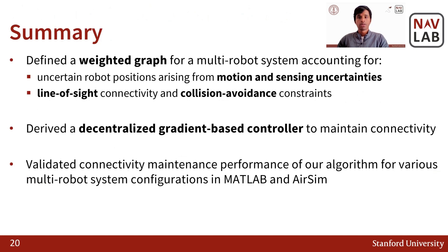In summary, we first defined a weighted graph for a multi-robot system that accounted for both motion and sensing uncertainties, and also accounted for more realistic communication constraints such as line-of-sight connectivity and collision avoidance. We then derived the gradients required for our decentralized controller, which allowed robots to maintain connectivity in the system. Finally, we validated our algorithm for various multi-robot setups and showed an improvement in connectivity maintenance performance under uncertainty compared to previous works. Thank you.